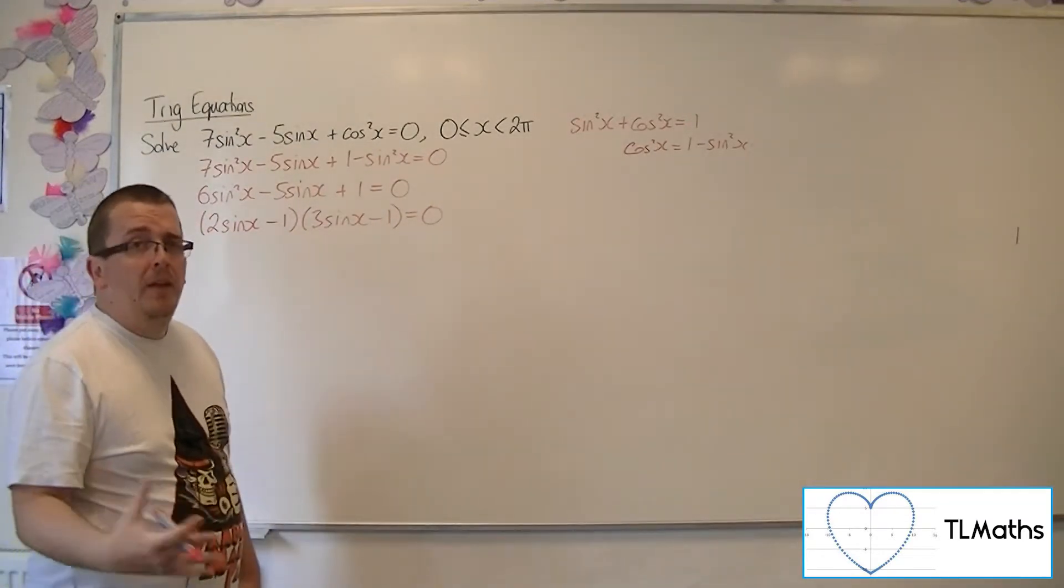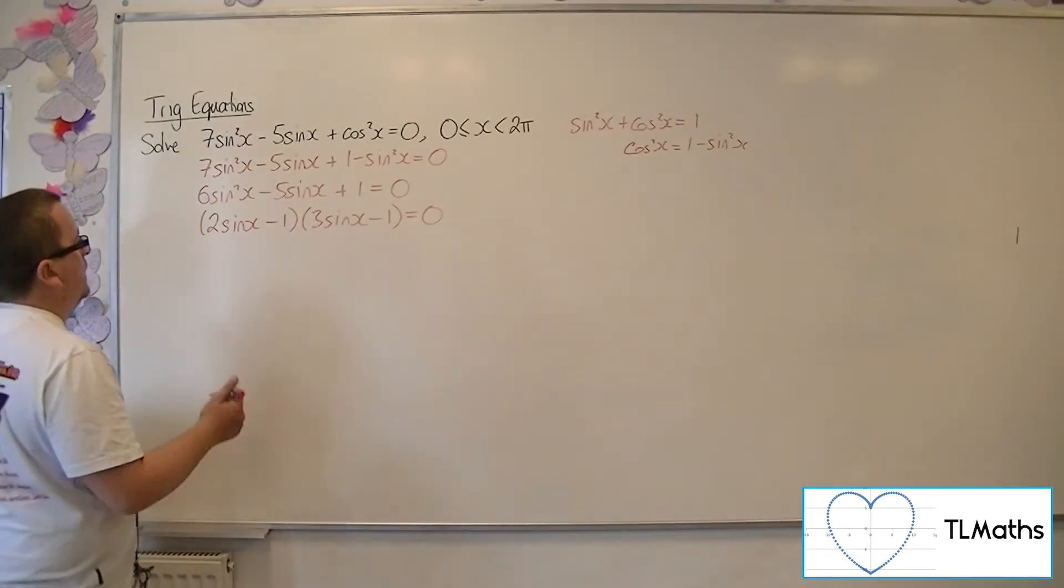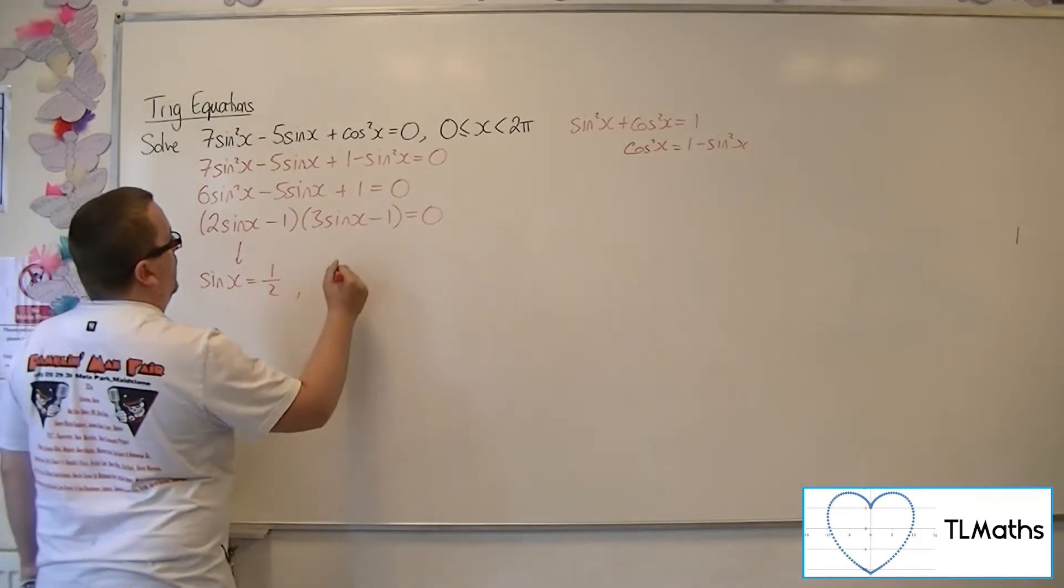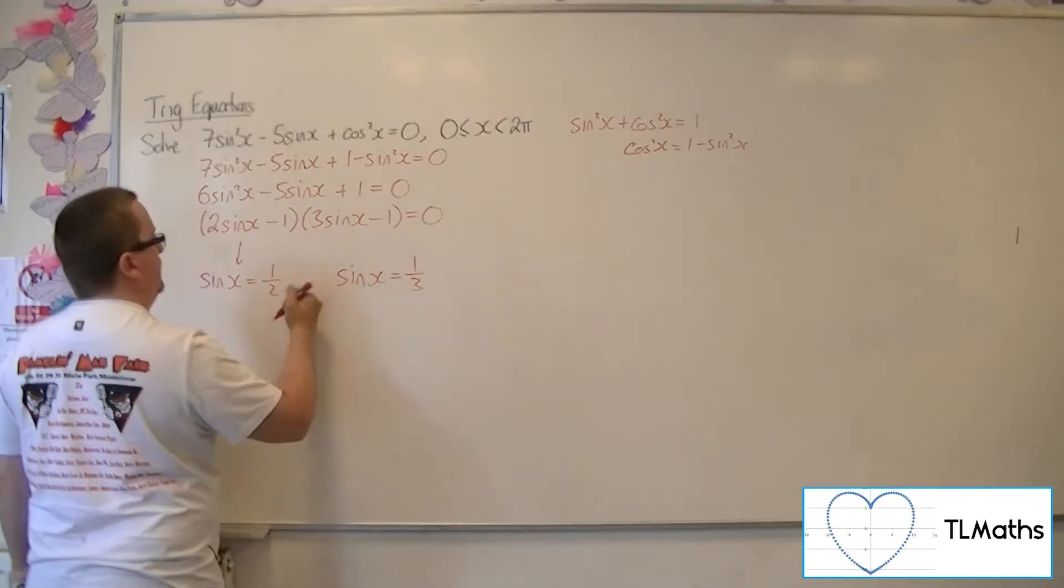Which is one you either spot, or you can use the factorizing process we've gone through. So either this bracket is 0, giving sinx = 1/2, or this bracket is 0, giving sinx = 1/3.